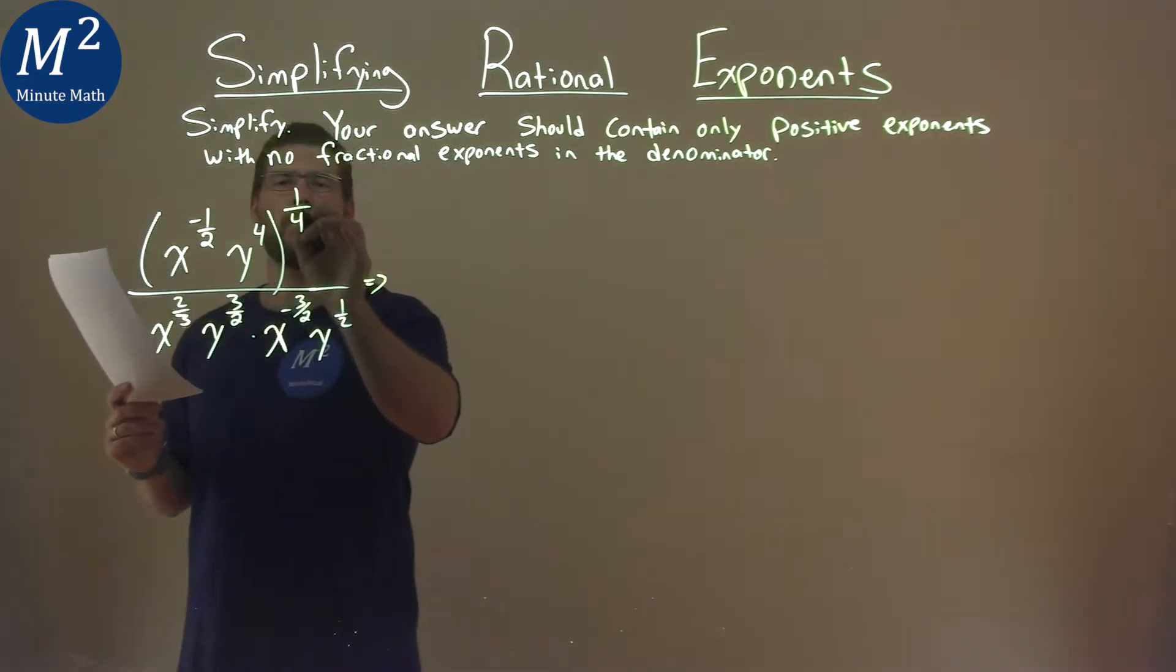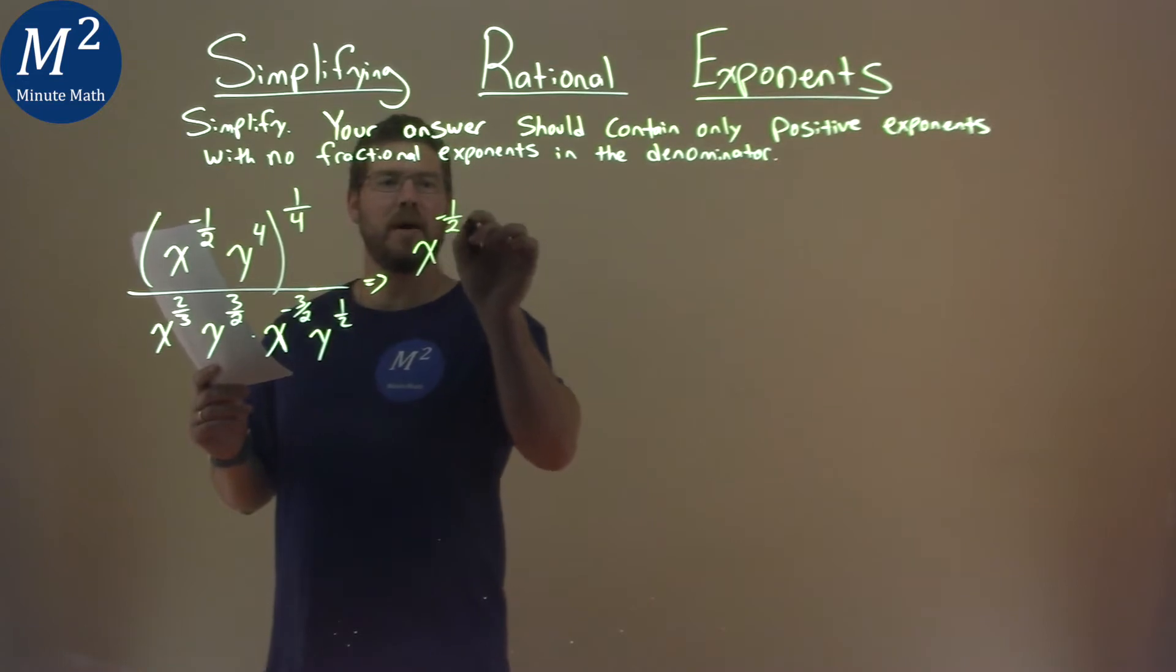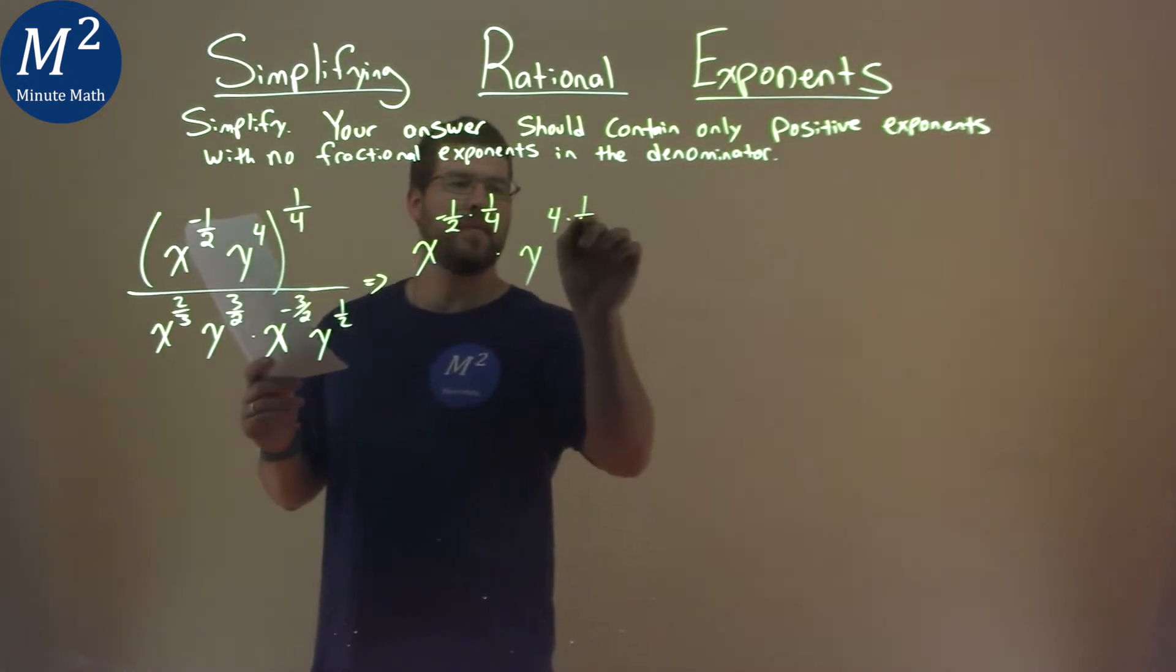We need to distribute this one-fourth power to both parts of our exponents. So we have x to the negative one-half power times that one-fourth. Remember we multiply the exponents here, times y to the four times the one-fourth power.